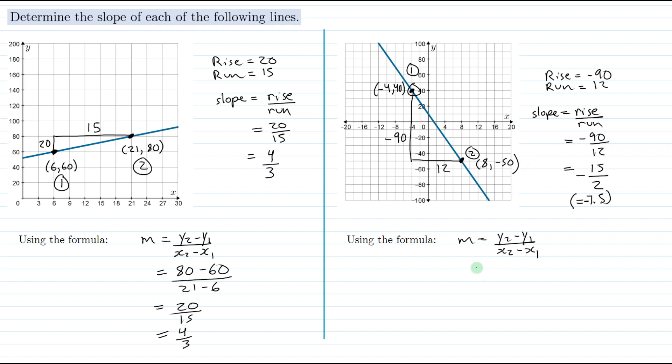So y2 minus y1, we're going to subtract the y values. So y2 is negative 50 and we'll subtract 40. And x2 minus x1, we'll subtract the x values. We have 8 for point 2 minus negative 4 for point 1. Negative 50 minus 40 is negative 90. 8 minus negative 4, well that's the same as 8 plus 4, so that's 12.